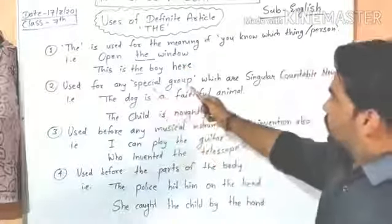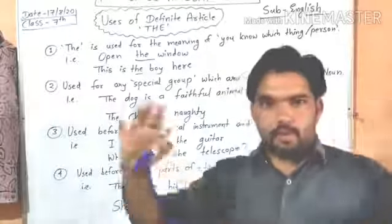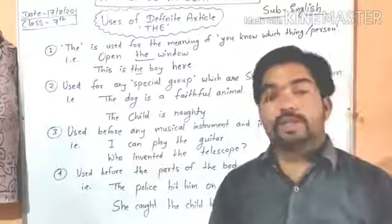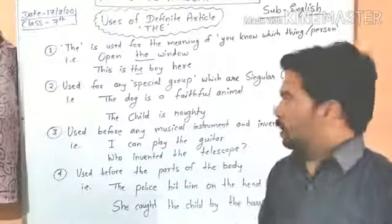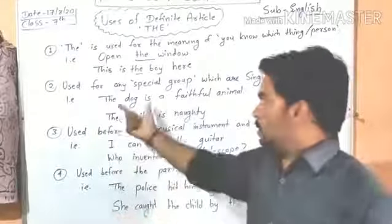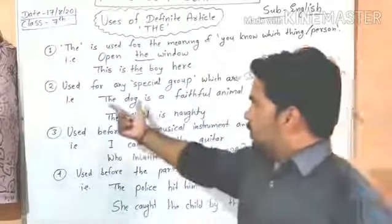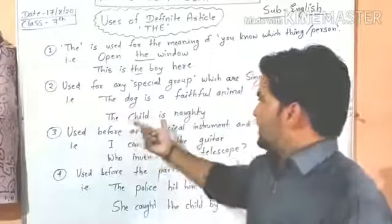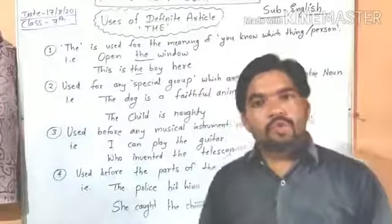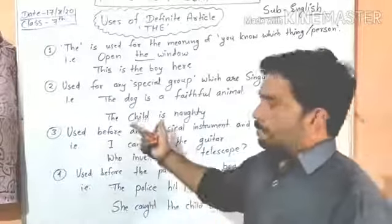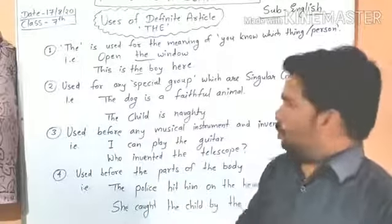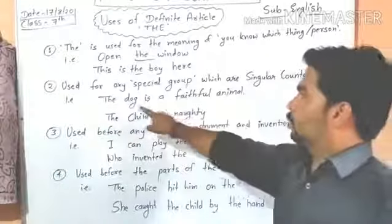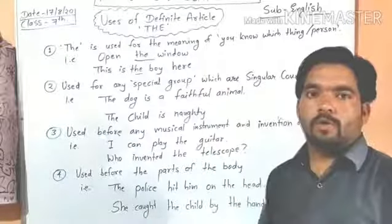The second use: 'the' is used for any special or particular group which are singular countable nouns. For example: 'The dog is a faithful animal' — यानी वफादार जानवर है। यहाँ पर संसार के सभी कुत्तों का एक group represent हो रहा है जो faithful हैं। Similarly, 'the child' — यह एक special group को suggest करता है।